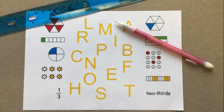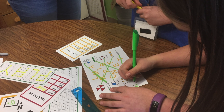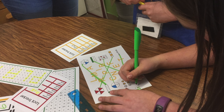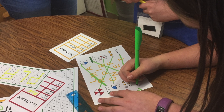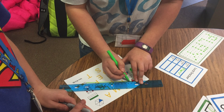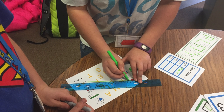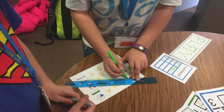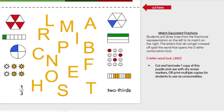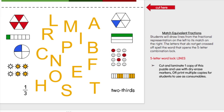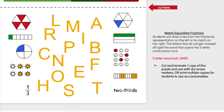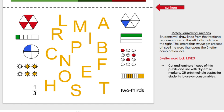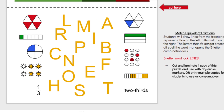Now for Puzzle 2, Match Equivalent Fractions, students will draw lines from the fractional representation on the left side to its match on the right. The letters that do not get crossed off spell the word that will open the five-letter combination lock. Cut and laminate, if you wish, one copy of this puzzle and use it with dry erase markers, or print multiple copies for students to use as consumables.